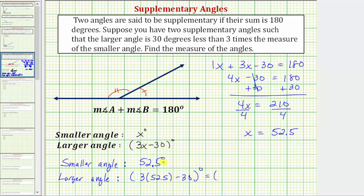Which would be equal to three times 52.5 is equal to 157.5. And then minus 30, which would give us 127.5 degrees for the larger angle.